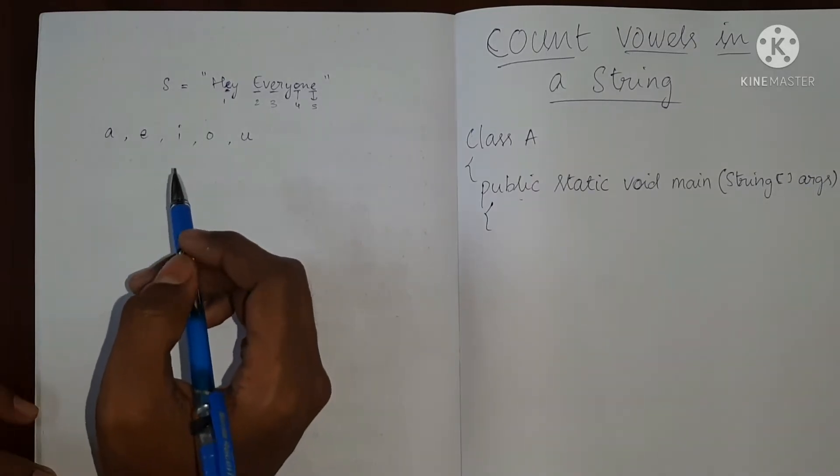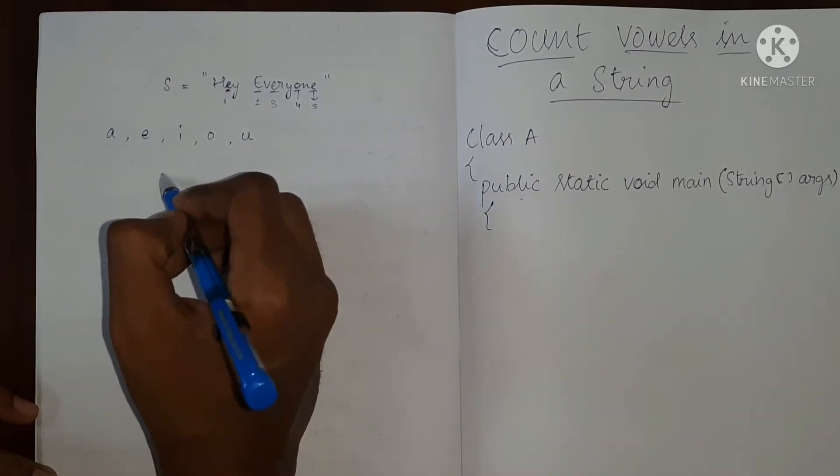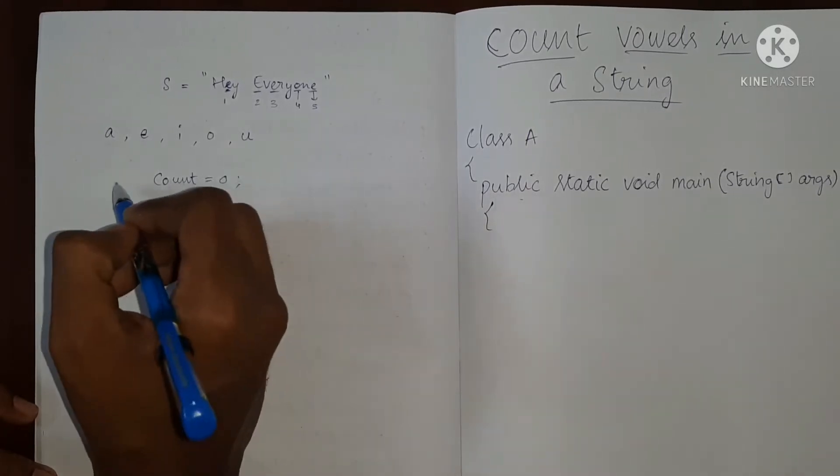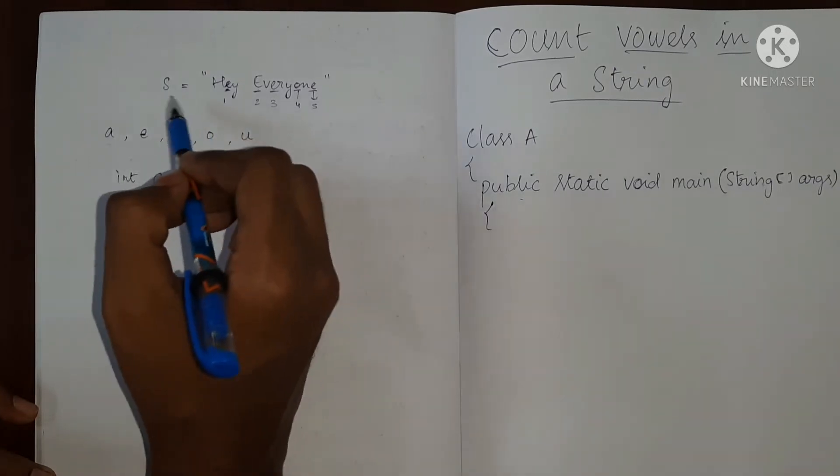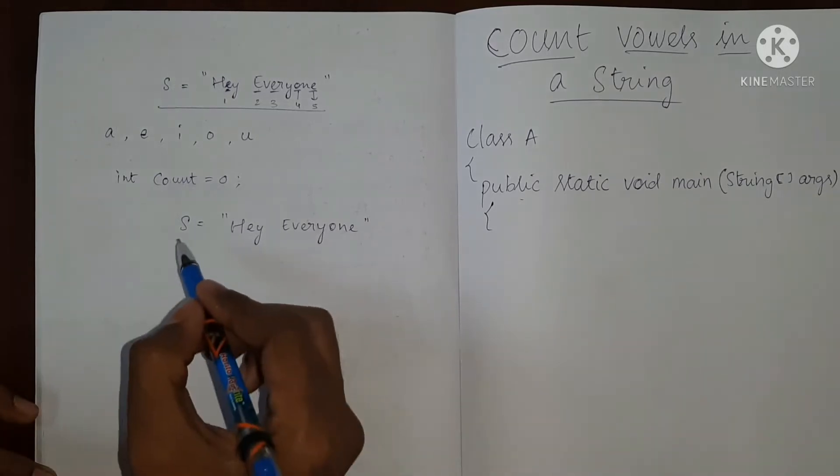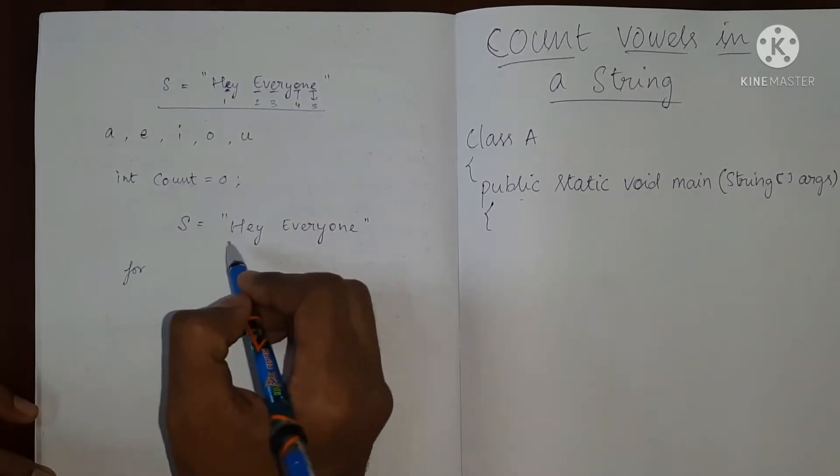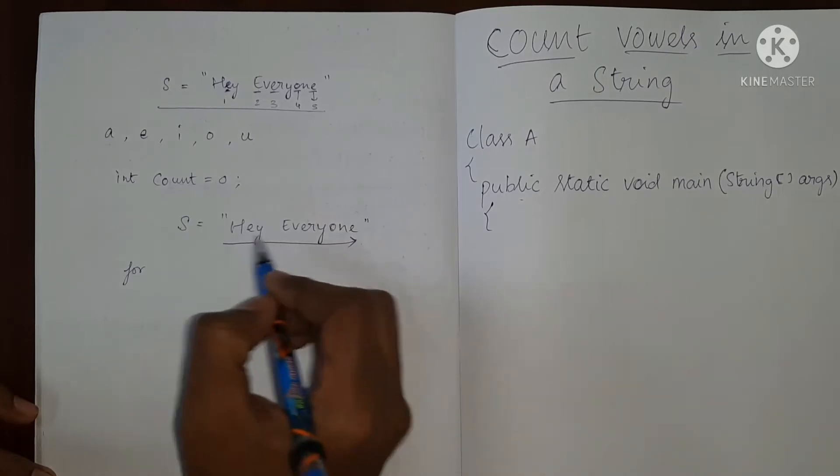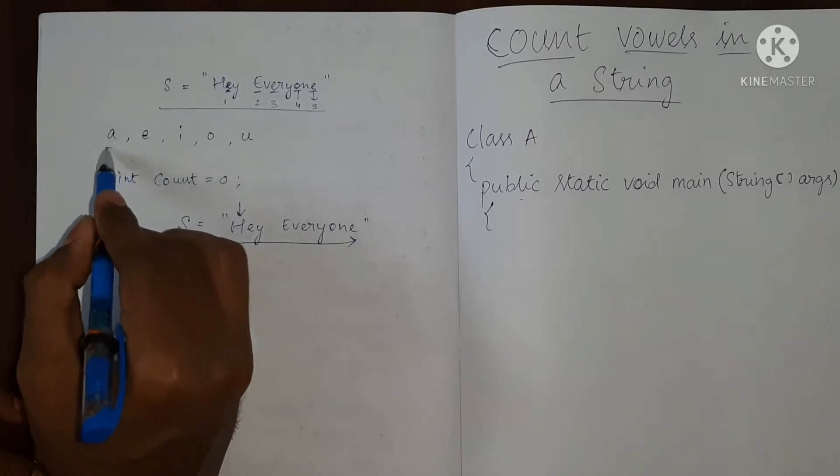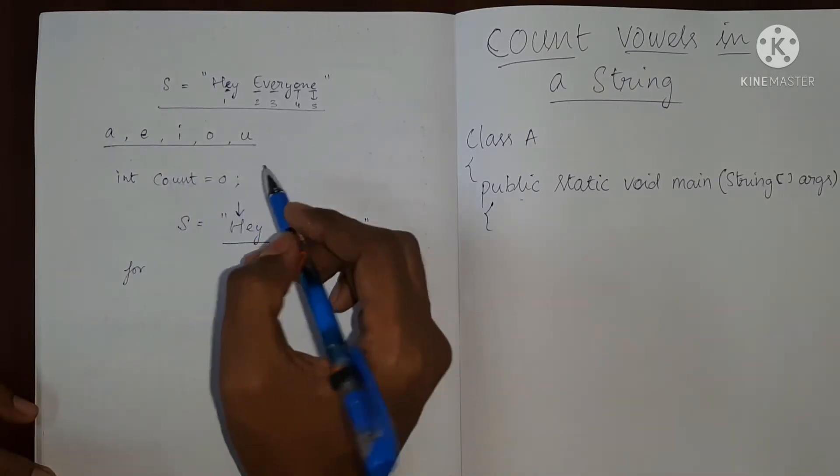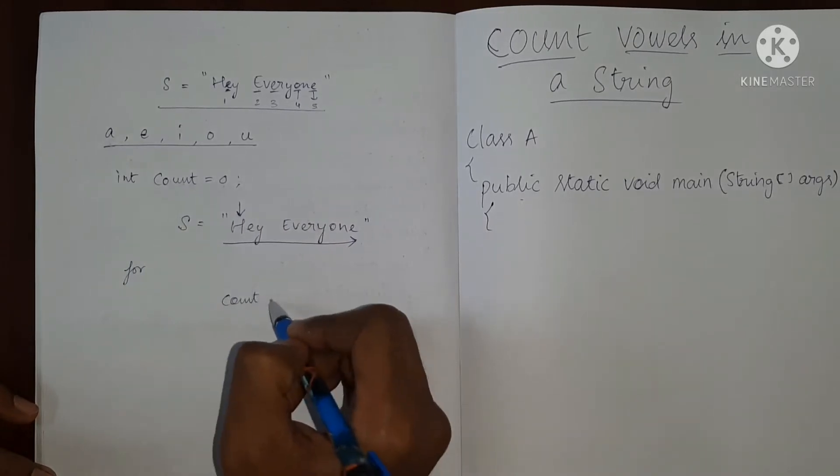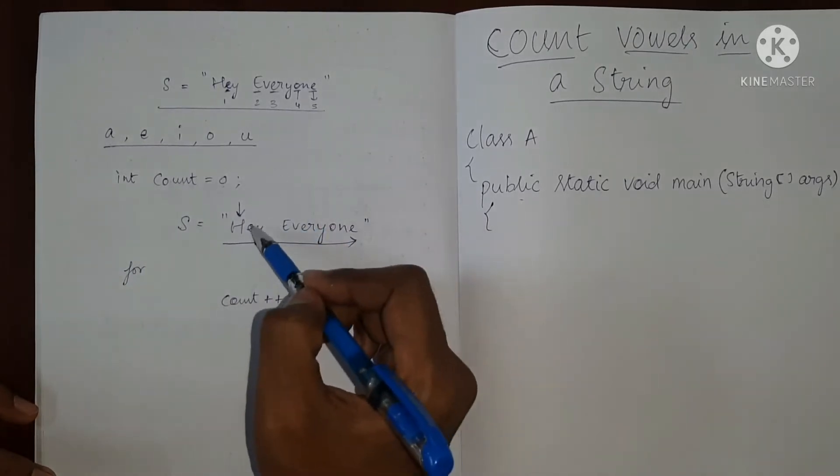So how will we do a program for this? We will have a variable called count, which will be initially zero of type int. Let me write down the string again. So we will use a for loop to traverse this string. And at each location, we will check if it is equal to any of these. If it is equal, we will increment count by one, that is count plus plus.